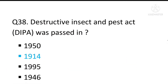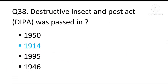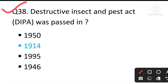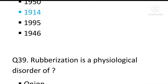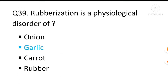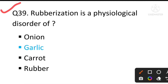Question number 38: The Destructive Insects and Pests Act, i.e., DIPA, was passed in 1914 — the answer will be 1914. Question number 39: Rubberization is a physiological disorder of — the answer is garlic.